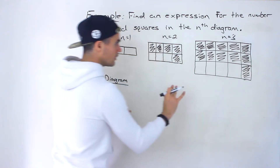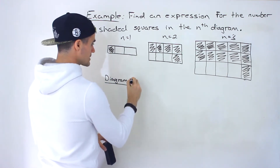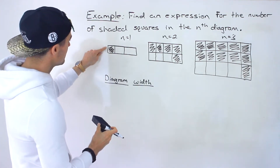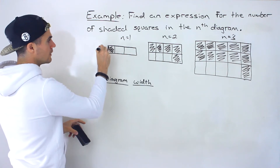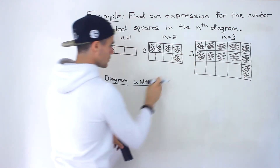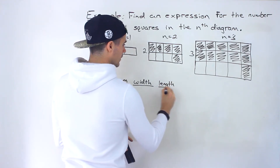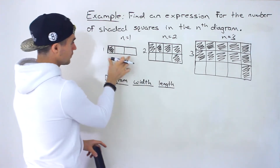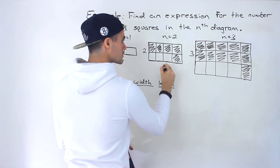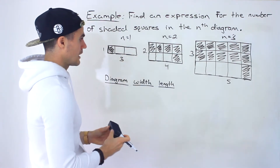What you want to do is create columns for different characteristics of these diagrams. Since we're dealing with rectangles, I'm going to create a width column representing the vertical dimension. The width is one in the first diagram, one-two in the second, and one-two-three in the third. Then I'll have a length column representing the horizontal portion: three in the first, four in the second, five in the third.